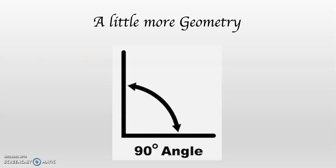This is an angle. Can you see that? This is a 90 degree angle. That type of angle has a name. Do you know what it's called? It's called a right angle.